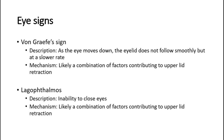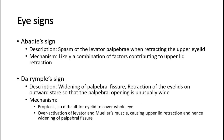Abadie's sign is the spasm of the levator palpebrae when retracting the upper eyelid. Dalrymple's sign is the widening of the palpebral fissure — retraction of the eyelids on outward gaze so that the palpebral opening is unusually wide. Its mechanism can be due to proptosis of the eye making it difficult for the eyelid to cover the whole eye, or due to overactivation of the levator and Mueller's muscle causing upper lid retraction and hence widening of the palpebral fissure.